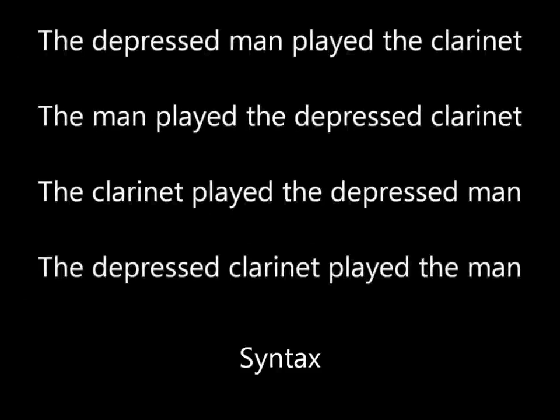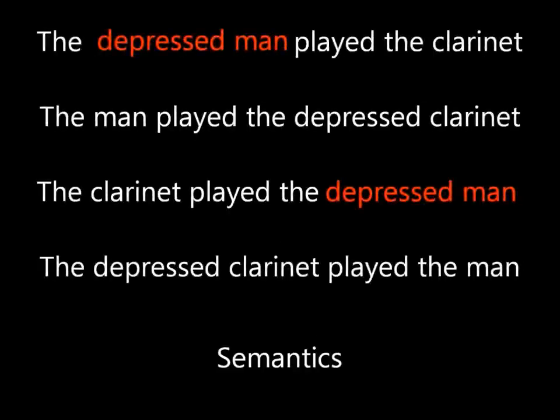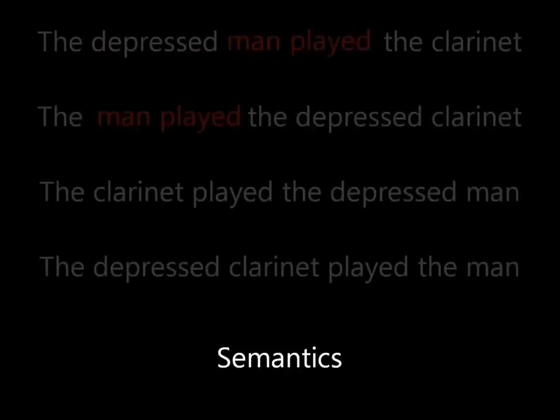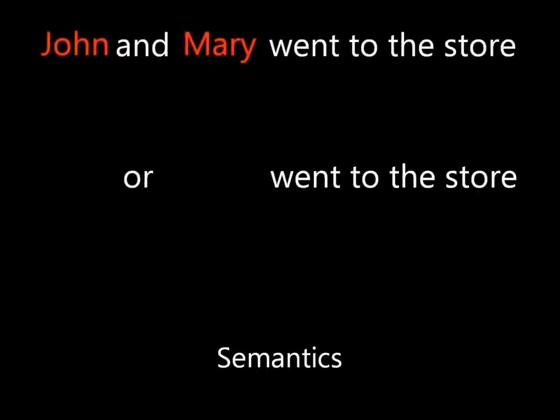You'll notice that some of these sentences sound a little weird. That's because of the last module of linguistics that I'll talk about: semantics. Semantics helps us determine the meanings of sentences. For instance, only animate nouns like 'man,' not 'clarinet,' can be depressed, and only animate nouns can be the subject of the verb 'to play.' Semantics also helps us differentiate the meanings between sentences like 'John and Mary went to the store' and 'John or Mary went to the store.'